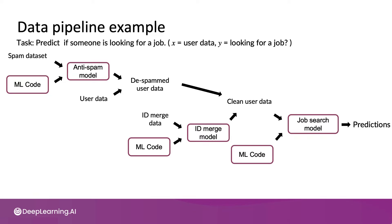One of the challenges of working with data pipelines like this is: what if, after running the system for months, you discover that the IP address blacklist you're using has some mistakes in it? In particular, what if some IP addresses were incorrectly blacklisted — maybe because the provider from whom you purchased the blacklisted IP addresses found out that multiple users share an IP address, such as on a corporate campus or university campus for security reasons, and the organization creating the blacklist thought it was spammy because so many people shared that IP address.